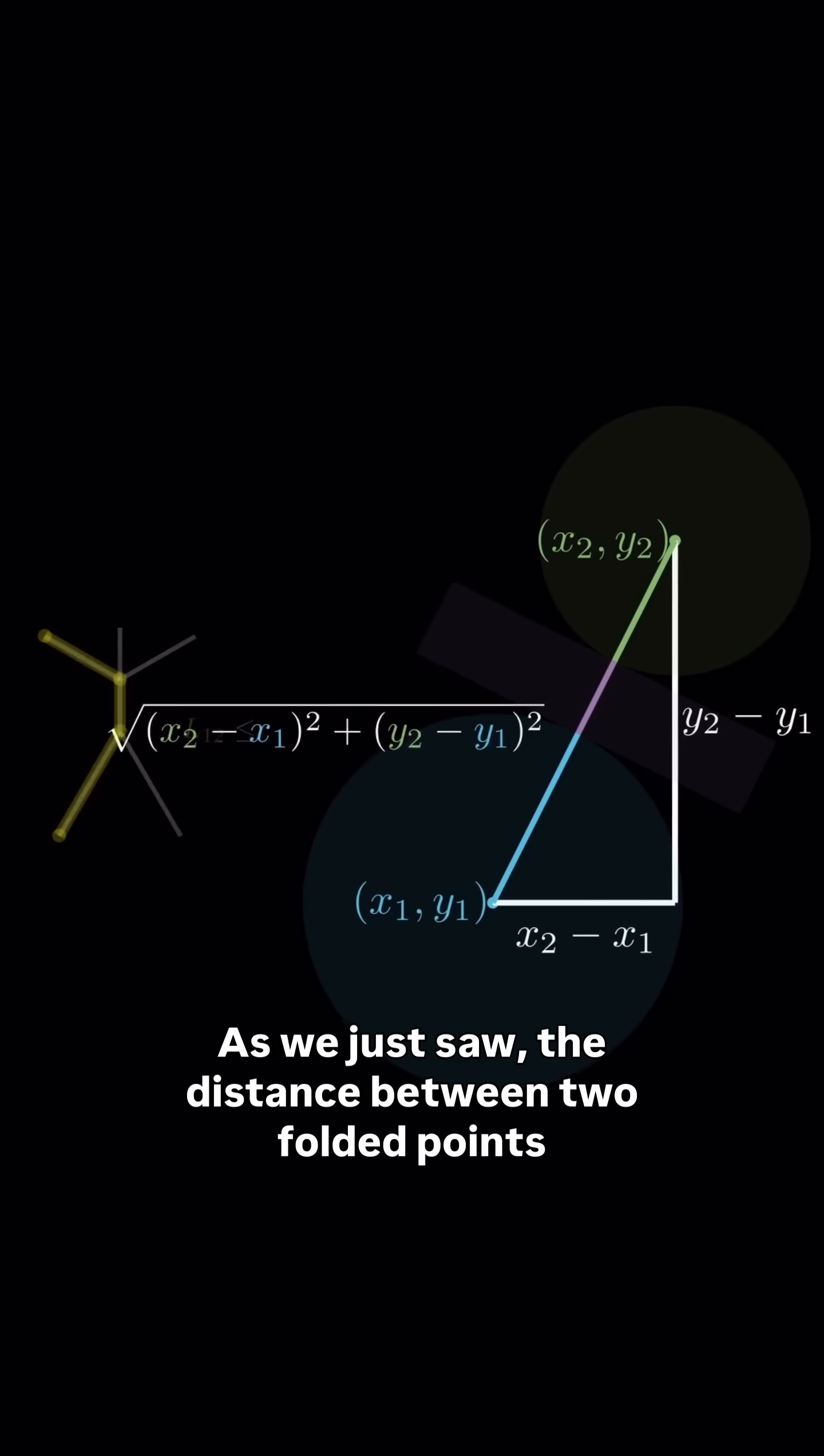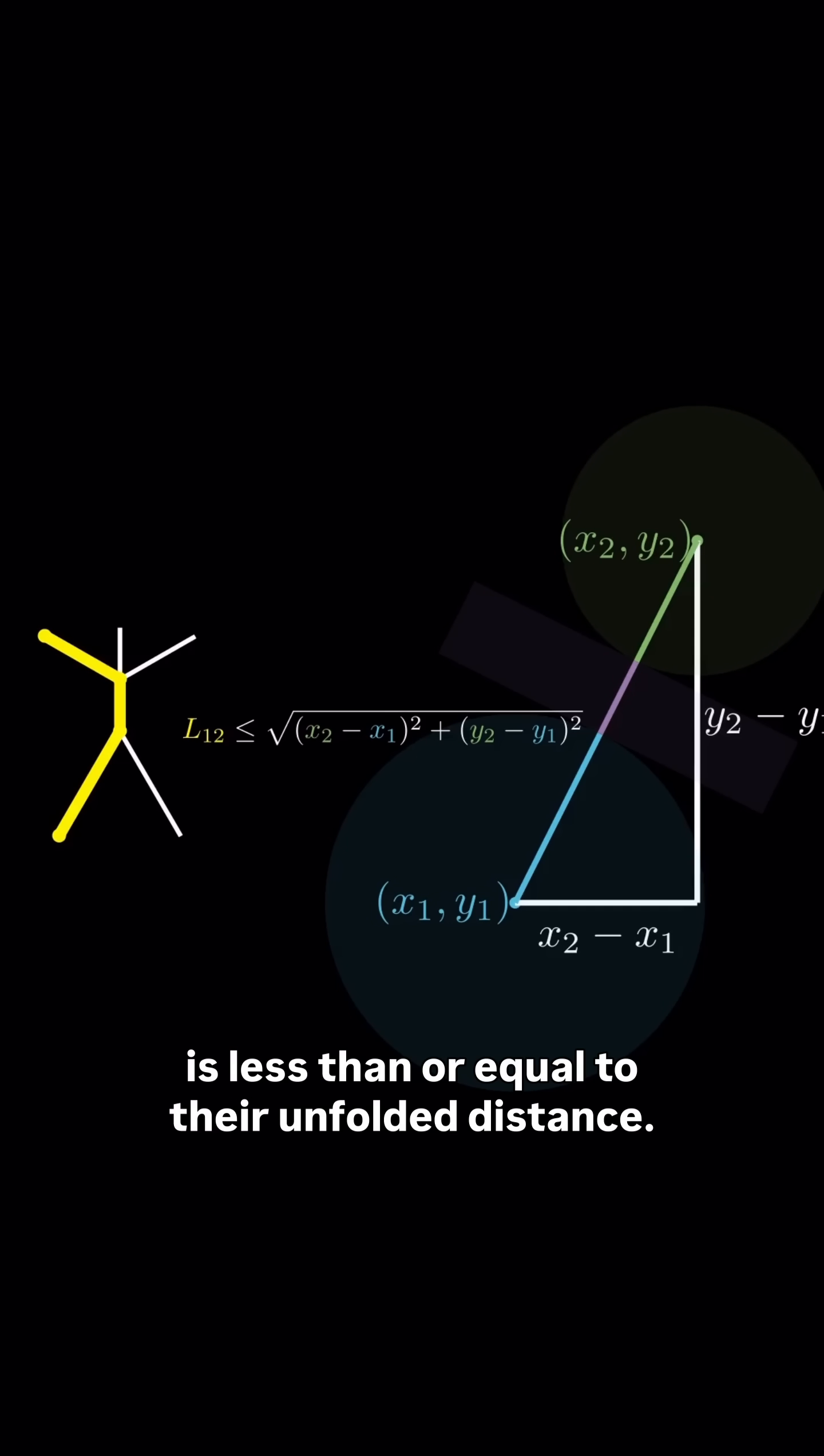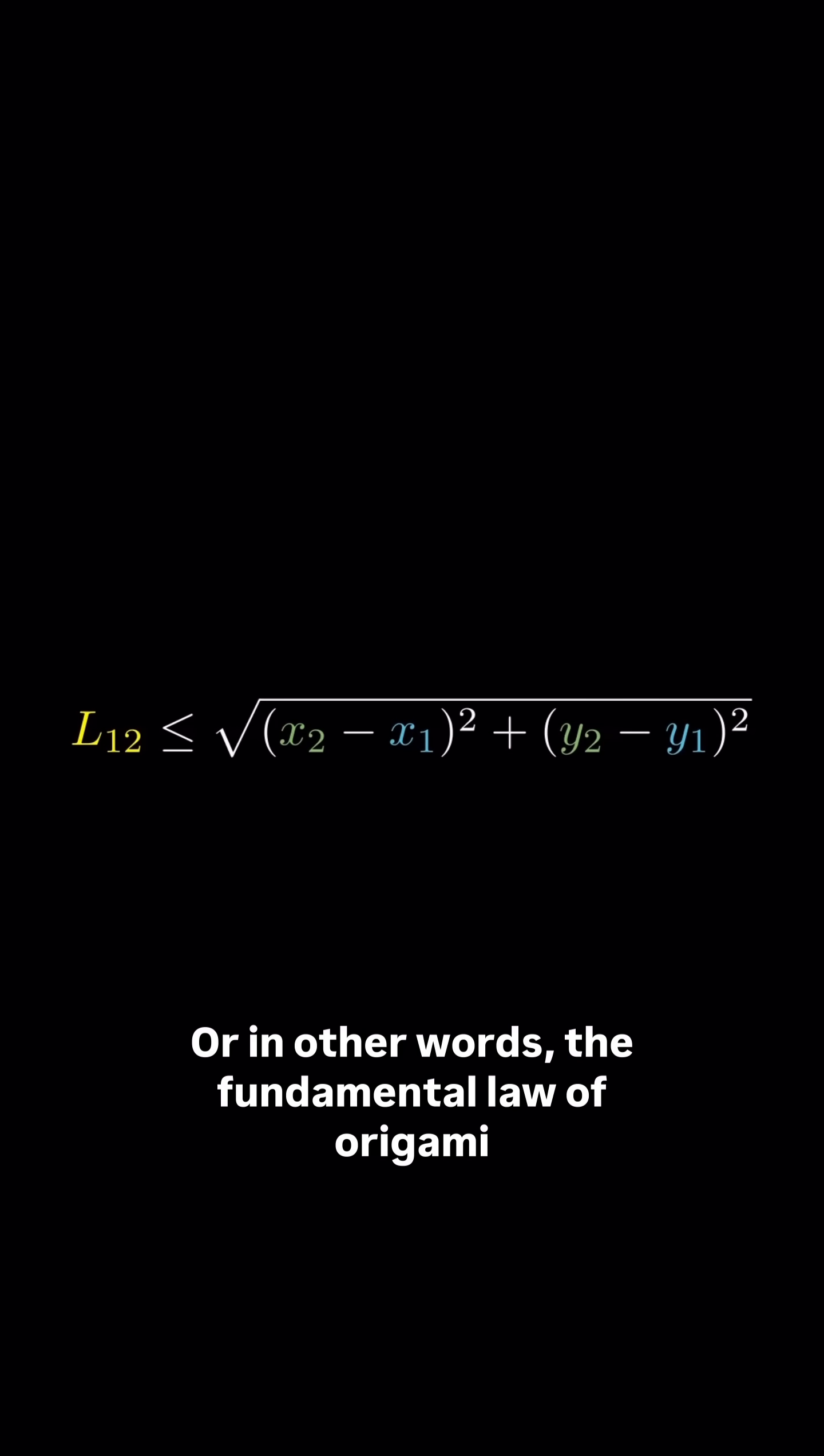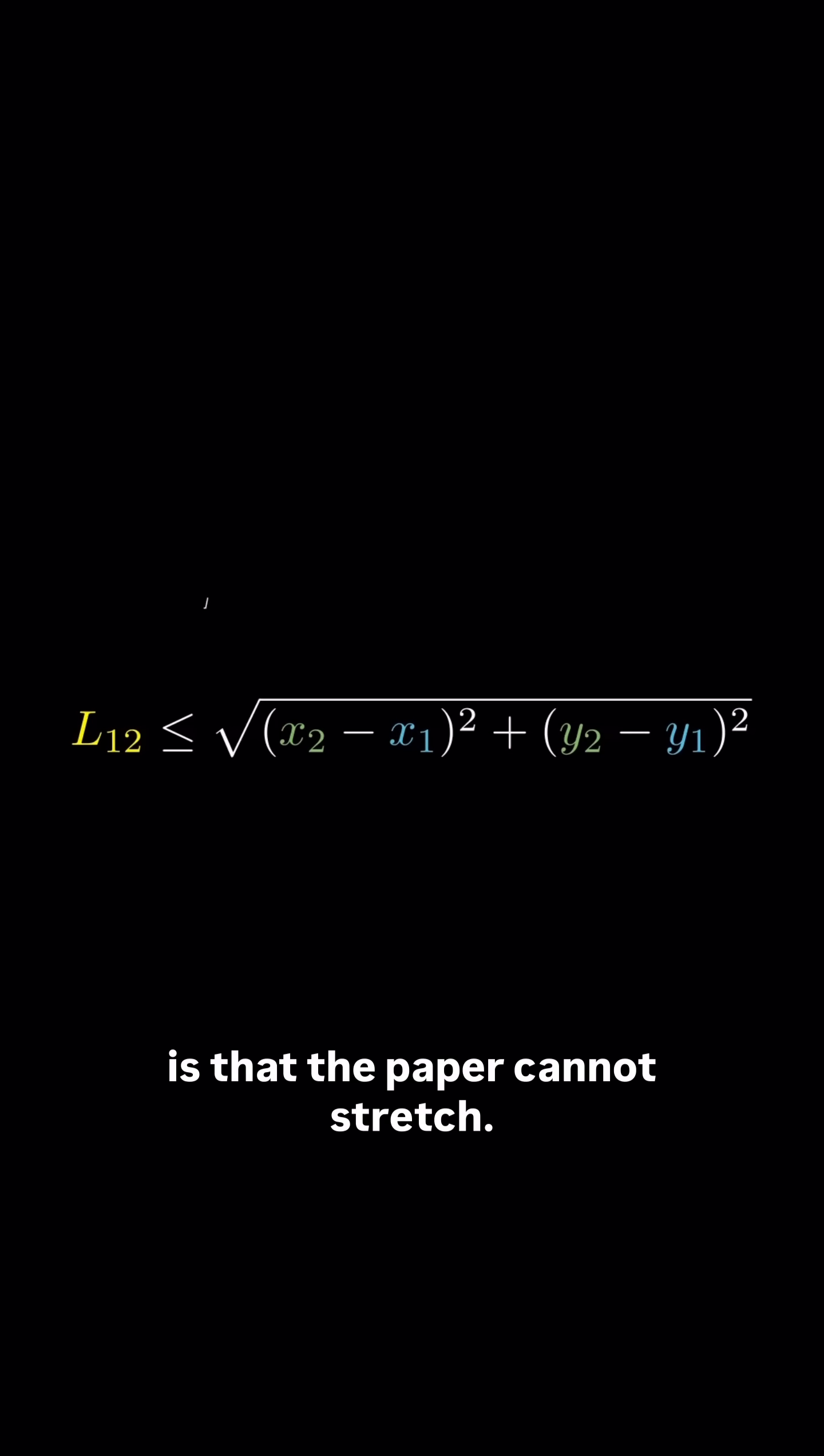As we just saw, the distance between two folded points is less than or equal to their unfolded distance, or in other words, the fundamental law of origami is that the paper cannot stretch.